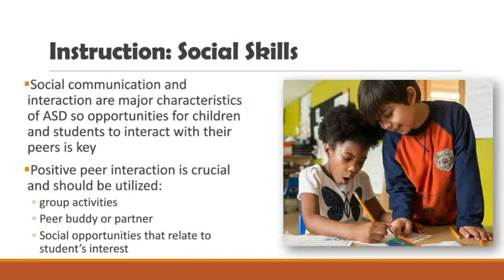Students with autism need to be explicitly taught social skills, as social communication and interaction are such important aspects of childhood. Some ways that teachers can provide social skill opportunities are having peer groups or putting a student in a group and giving them a role. Other social interactions can involve prompting communication, such as asking 'What are you doing?' or 'Is this your friend?' so they understand that working with peers their age is appropriate.